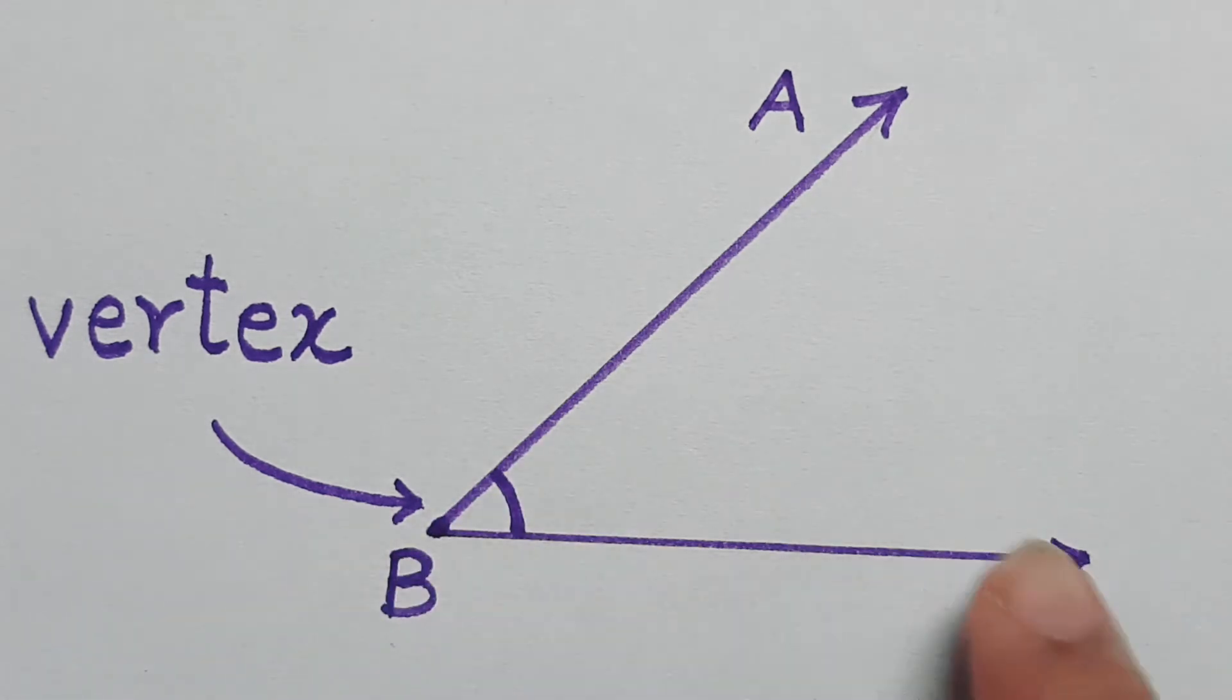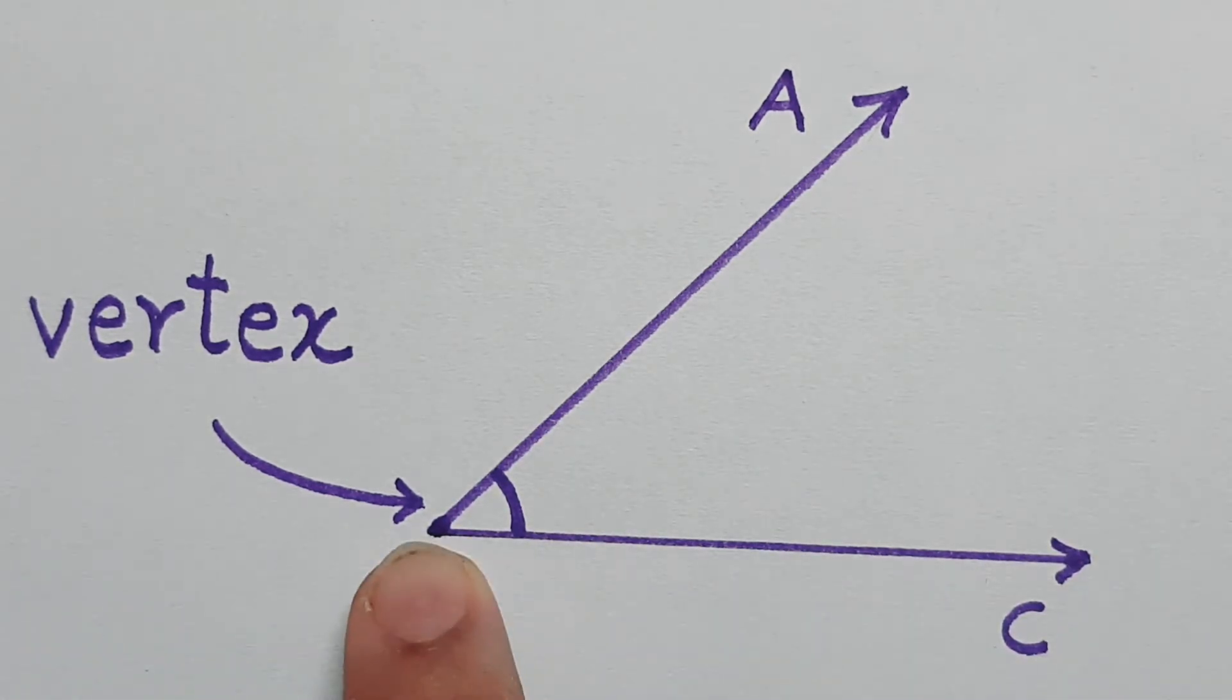BA and BC are the two arms of the angle. The meeting point of two arms is called the vertex. Here, point B is the vertex of the angle.